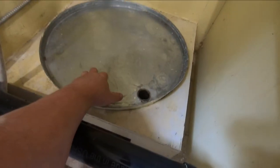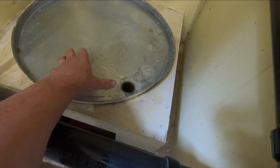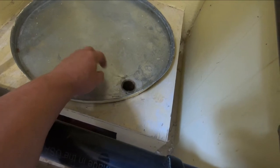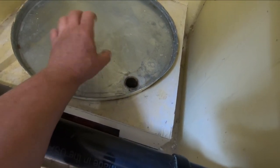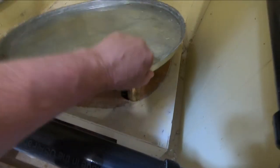Most insurance companies these days want you to have a pan under your hot water tank, especially if it's on a higher level in the house like a second floor. But even if it's on a lower level it can leak and cause a lot of damage.